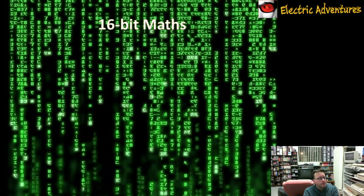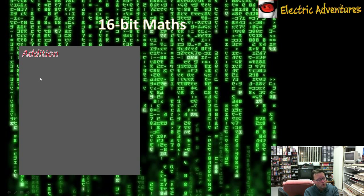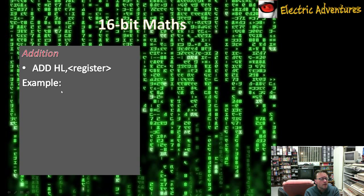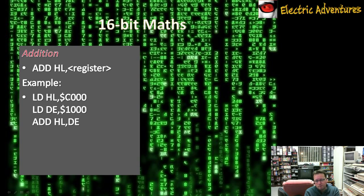Now on to 16-bit maths. For addition this uses the ADD instruction again, and that's why a register was specified — because HL takes on the role of the accumulator for 16-bit maths. It can only interact with other 16-bit registers, so no direct values. As an example, if we load HL with $C000 and load DE with $100, then ADD HL, DE — this would end up with HL containing $D000. I've done the maths here so it's easy to see what's happening.